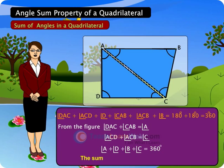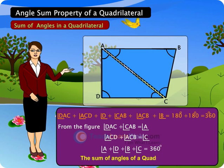The sum of angles of a quadrilateral is 360 degrees.